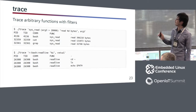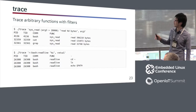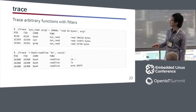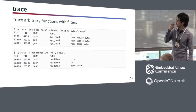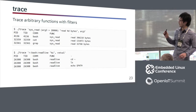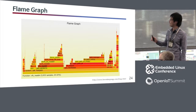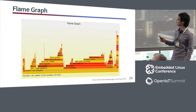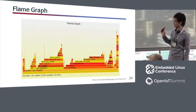The Trace command traces arbitrary functions with filters — tracing a function in the kernel and filtering the result with its argument values. The example on the lower side traces the readline function in bash and prints the return value. This tool is useful for any kind of ad hoc analysis. And frame graph shows the function stack history of the whole system — you can easily find which function is time-consuming and roughly check the sanity of functions.